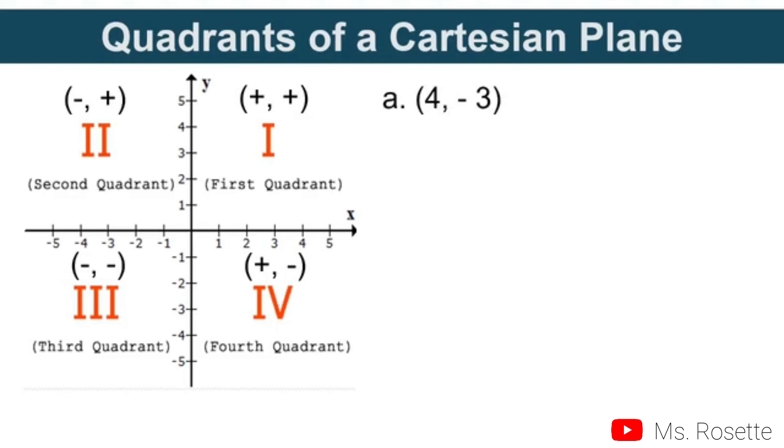For example, we have (4, -3). In what quadrant does it belong? Since this is positive and negative, the value of x is positive and the value of y is negative. Therefore, the quadrant we are looking for is the fourth quadrant. This means that when you start plotting your points, you will find your point in the area of quadrant 4.